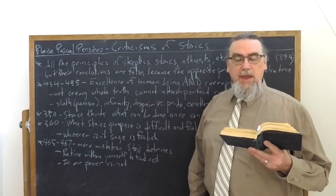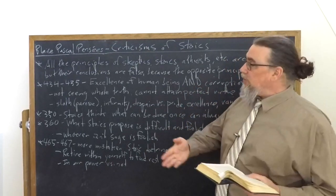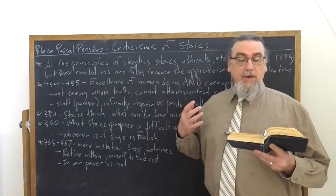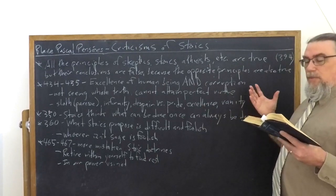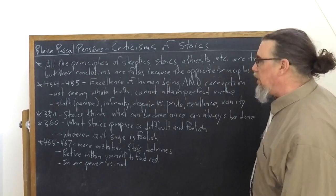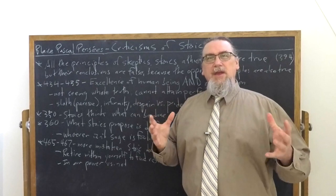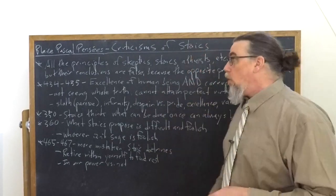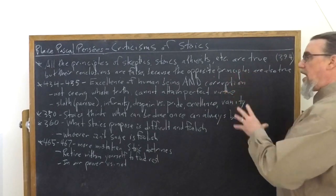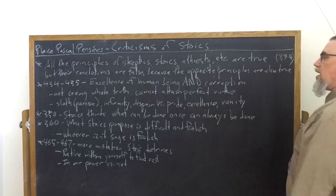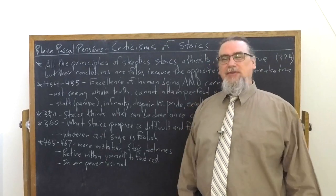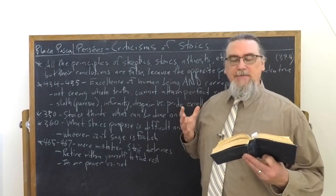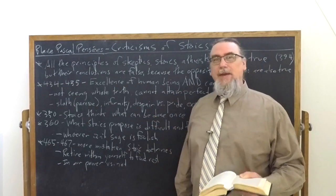If they knew the excellence of human beings, they were ignorant of their corruption. So that allows them to avoid sloth, but they easily fall into pride. If they recognize the infirmity of nature, they were ignorant of its dignity so that they could easily avoid vanity. But it was to fall into despair. So you've got two choices. You can either focus on the infirmity, the corruption of human beings, and then you're going to be slothful. You're going to focus on infirmity and fall into despair, desespoir. Or you ignore that and you focus on the excellence of human beings, which is a true excellence. Then you are driven by pride and that leads to vanity. So these are the two choices. And then what does he say after that? Thus arise the different schools of the Stoics and Epicureans, the dogmatists, Academics, et cetera. So the Stoics are definitely on one side of this choice.